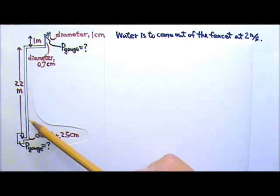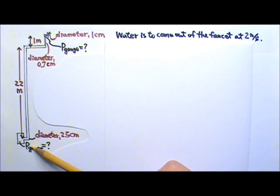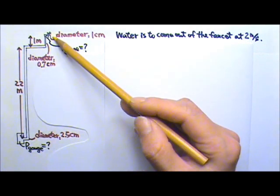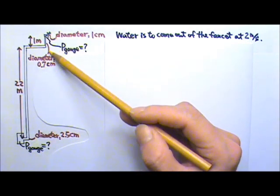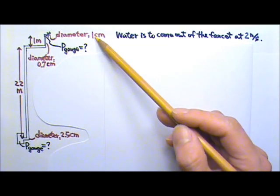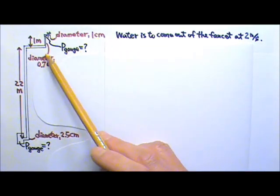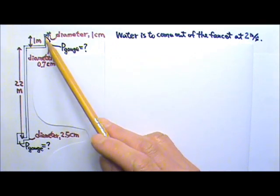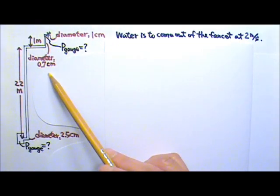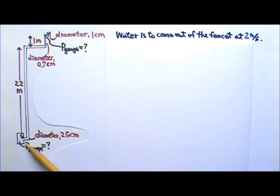A pump at the bottom of a 22 m deep well is used to pump water to a faucet that is 1 m above ground. The inner diameter of the faucet opening is 1 cm. The inner diameter of the pipe that's connected to the faucet is 0.7 cm. The inner diameter of the pipe at the pump is 2.5 cm.